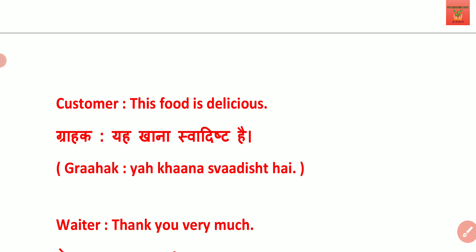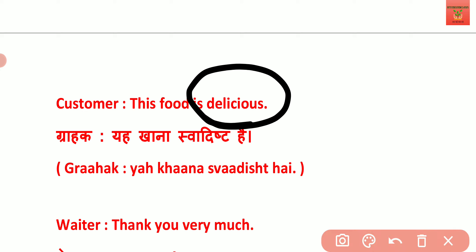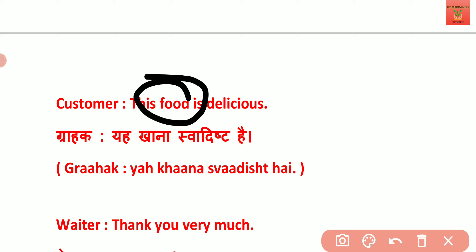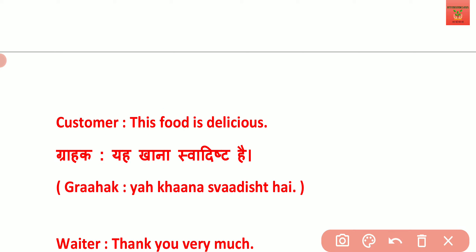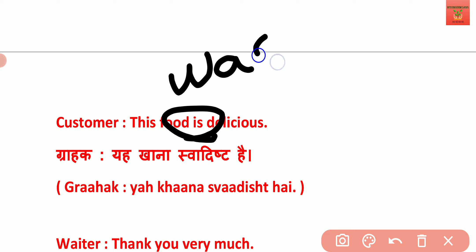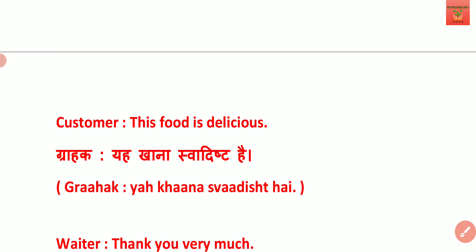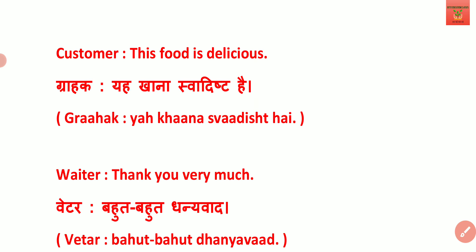Customer bolta hai: 'This food is delicious!' — 'delicious' yaani ki swadisht. Aap khana khaa rahe ho aur aapko khana bahut pasand aa raha hai, toh aap uski tarif kar rahe ho: 'This food is delicious.' Yahan 'is' present tense ke liye use hota hai — maaniye ki aapke saamne khana hai tab aap bolo 'This food is delicious.' Lekin agar aap khana kha chuke ho aur hotel se nikal gaye ho aur friends ke saamne us hotel ki tarif kar rahe ho, toh 'is' ko hataakar past form 'was' use karenge — 'That food was delicious.'